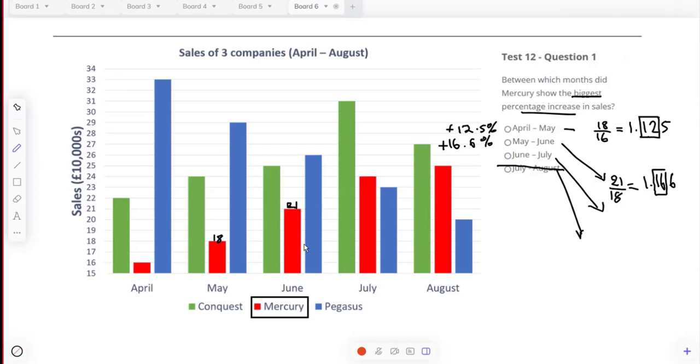Let's just see. I think the only other competitor could be June to July. This goes up from 21 to 24. So let's do that: 24 is where we're going to, divided by 21. And that's just not competing with 16. That's 1.1428, which if you put a box around these is 14, 14.3%.